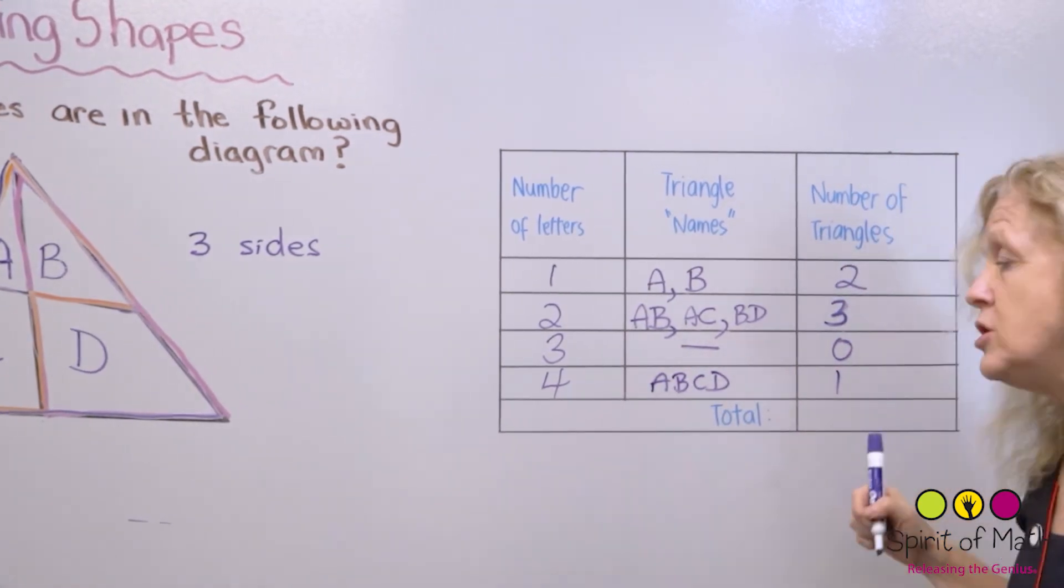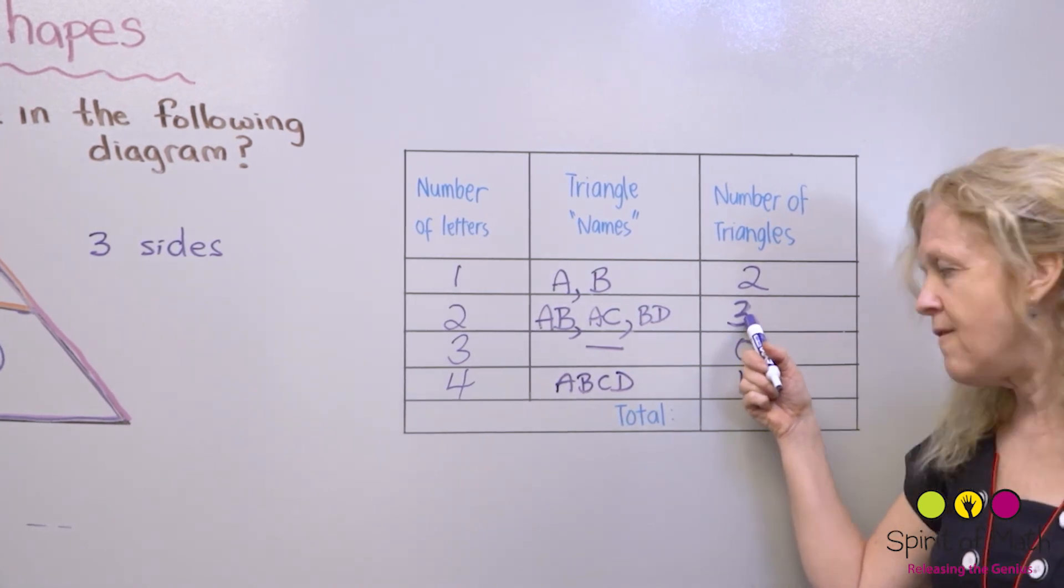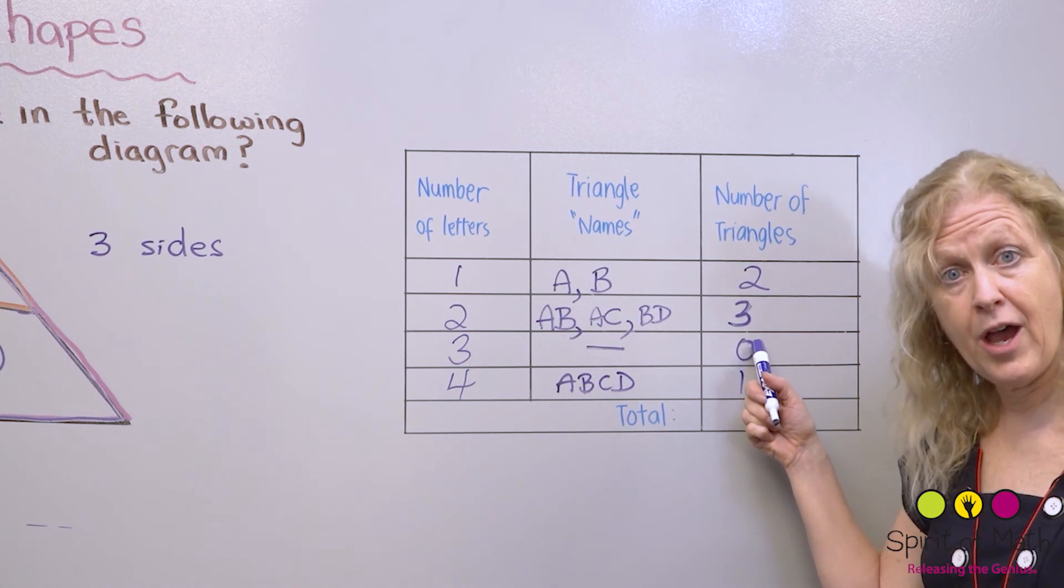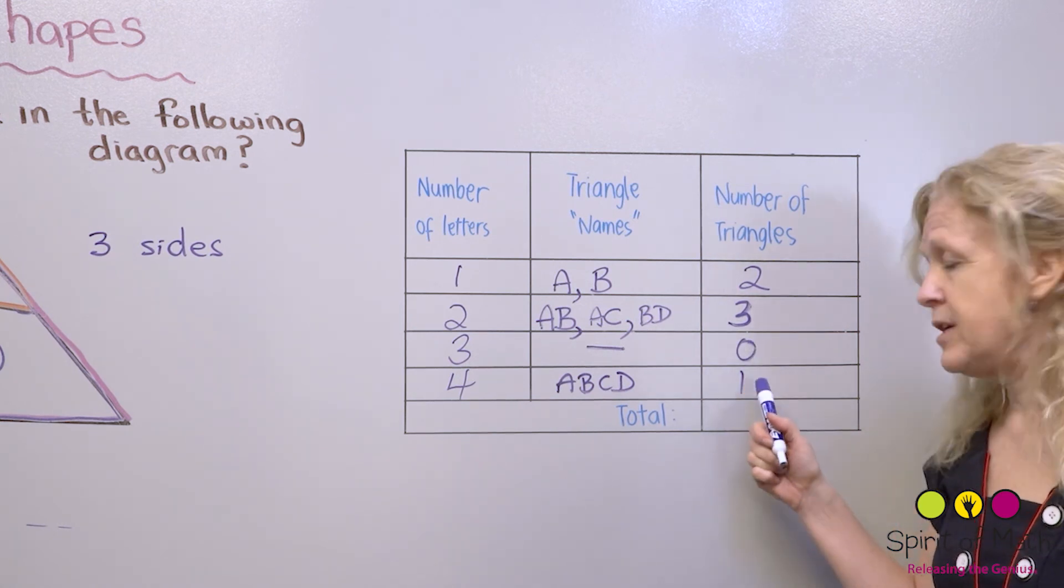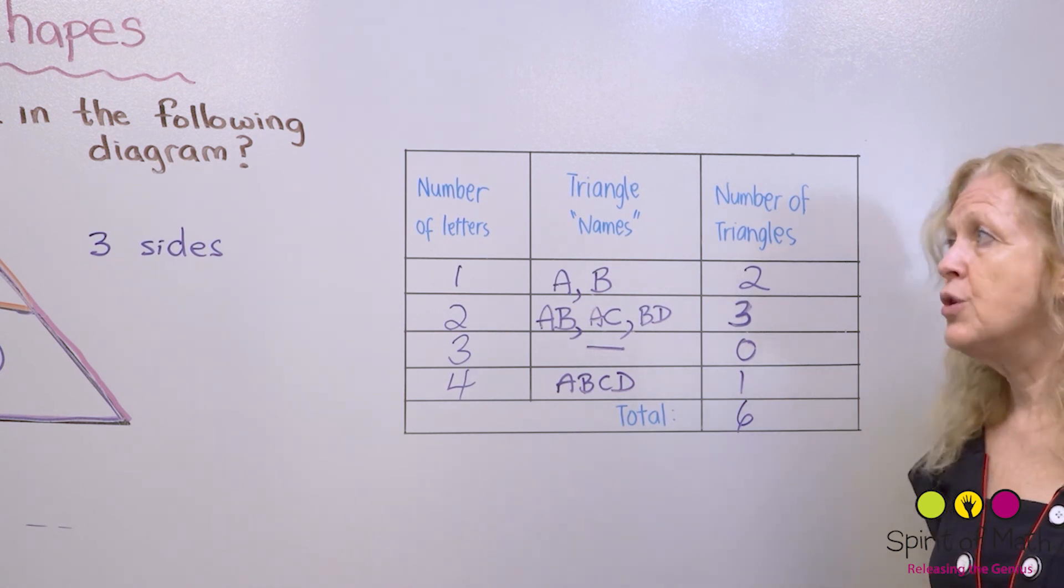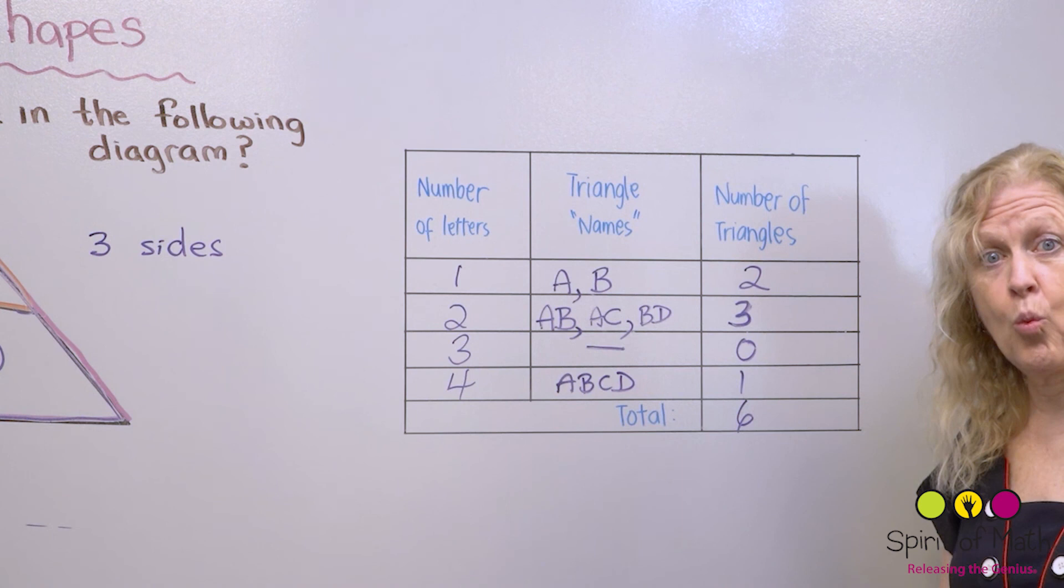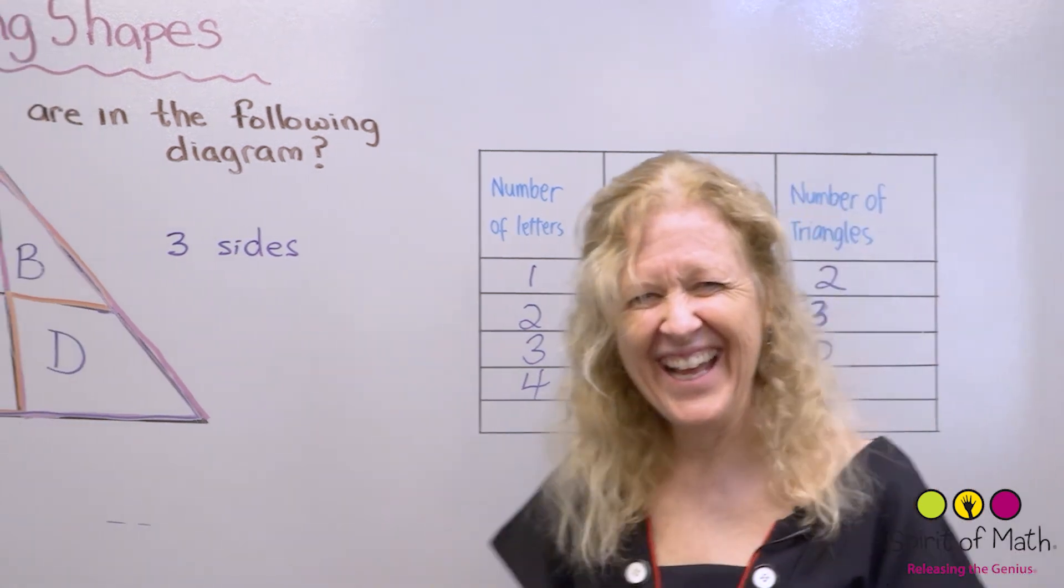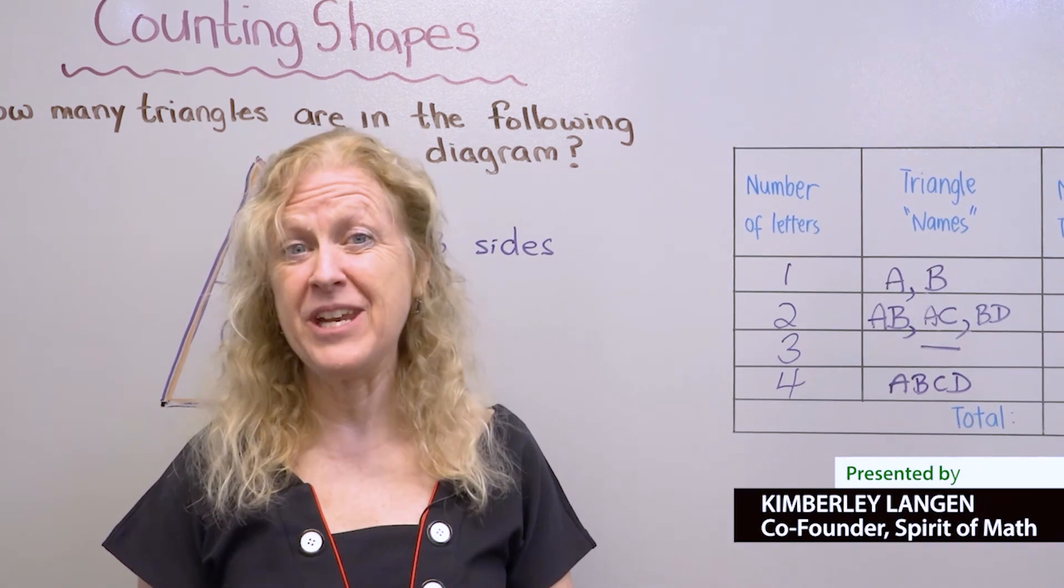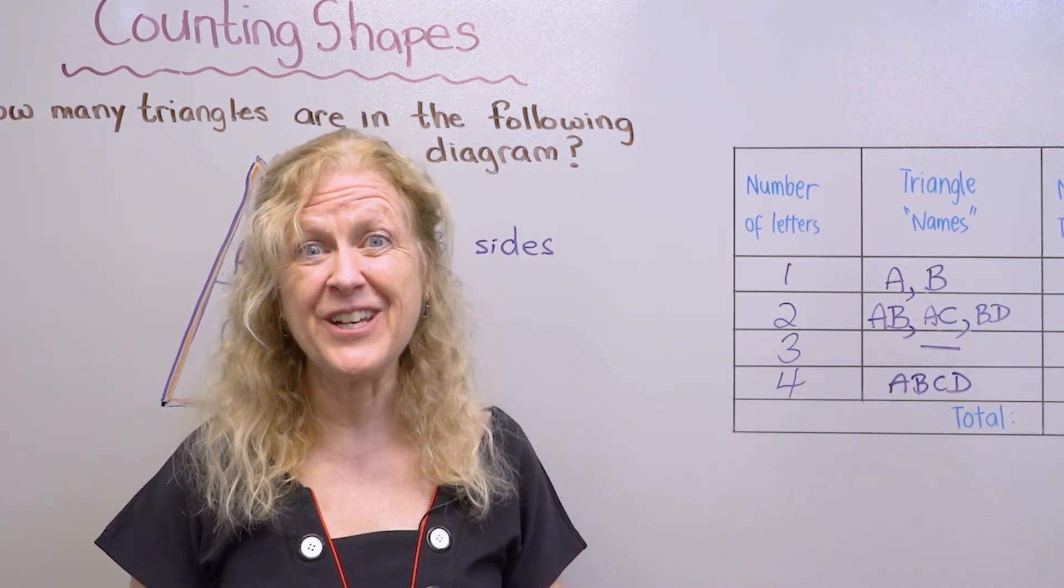So now what you do is you add them up. Two plus three is five. Five plus nothing is still five. So five plus one is six. And there's your total. So there are six triangles in that picture. Wow! Isn't that neat? Now you go back and see if you can find out how many triangles are in all the other ones that are given to you. Thank you and have fun.